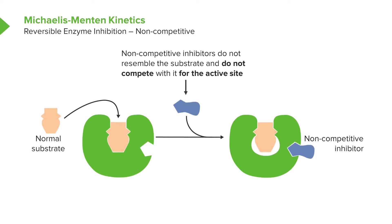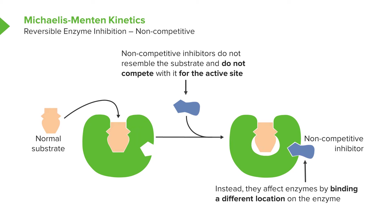Another type of inhibition important for us to understand is non-competitive inhibition. It's fundamentally different from competitive inhibition, as we can see depicted on the screen. On the left again we have the enzyme with its normal substrate catalyzing a reaction. However, the enzyme has a site that if properly targeted by an inhibitor, the inhibitor can bind to it and keep the enzyme from functioning properly even with the substrate in the active site — shown in the image on the right. The non-competitive inhibitor binds at a different location and by doing so does not compete with the substrate.